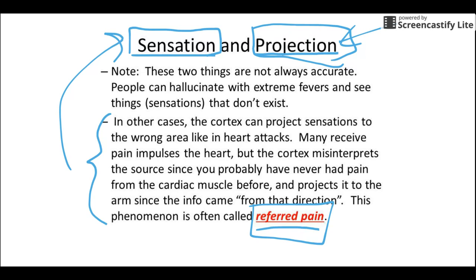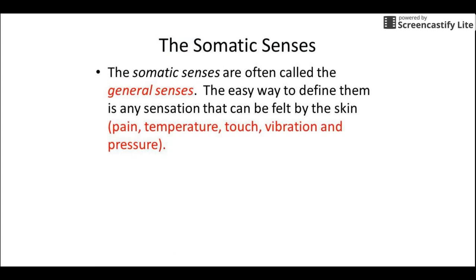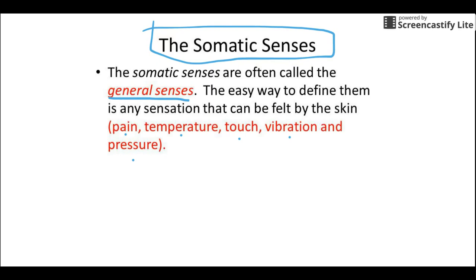In this video we're focusing on the somatic senses versus the special senses, which have a separate video. The special senses are vision, touch, balance, hearing, smell, and taste. Everything else is called the somatic senses or general senses — things like pain, temperature, touch, vibration, and pressure. Pretty much what you can feel with your skin is a somatic sense. If you need a special organ like your eye or ear to detect it, it's a special sense.